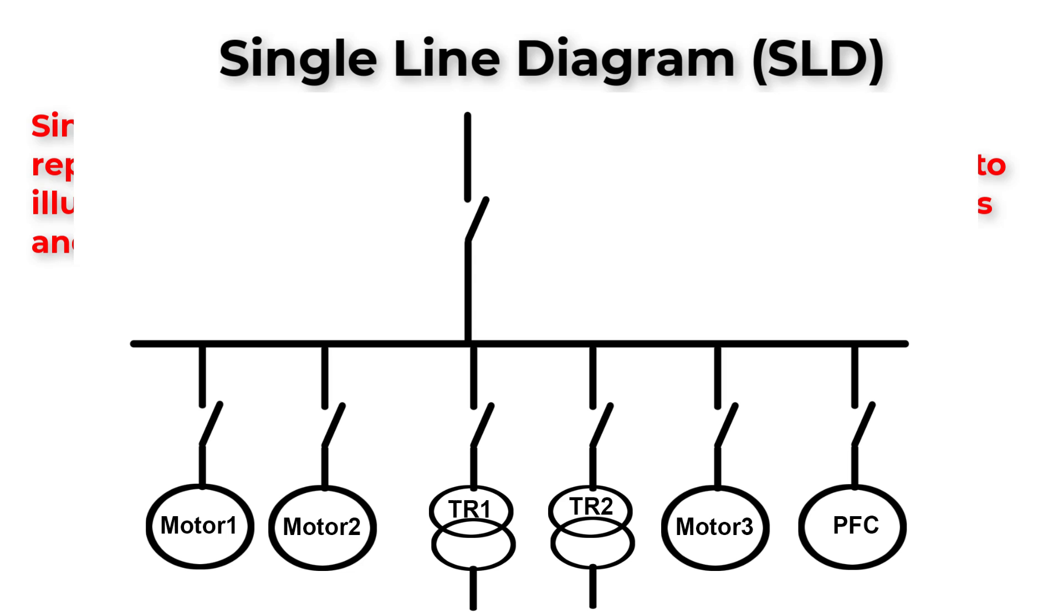Instead of representing three conductors or four conductors in a three-phase system, we will draw only one conductor and mark this conductor with three or four small lines representing a three-phase system.